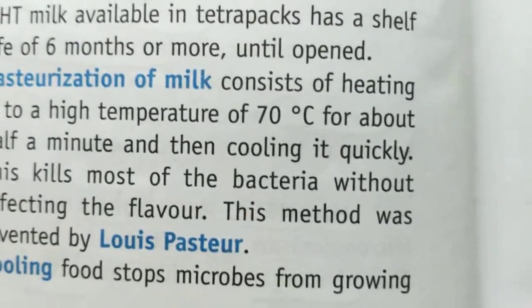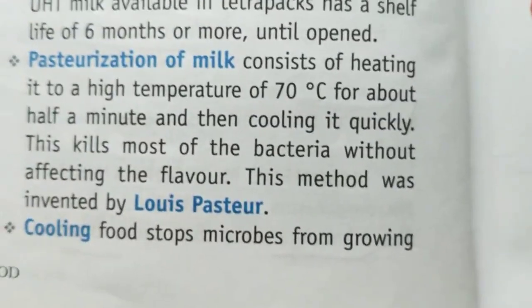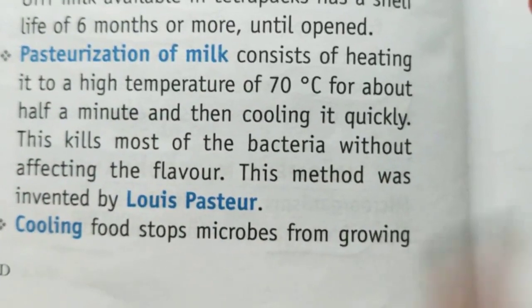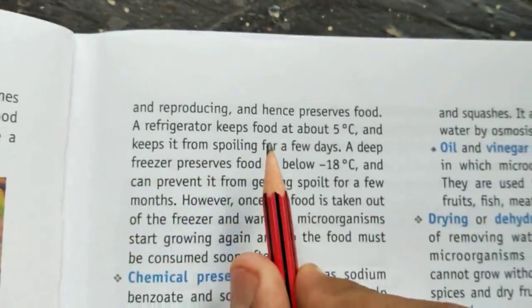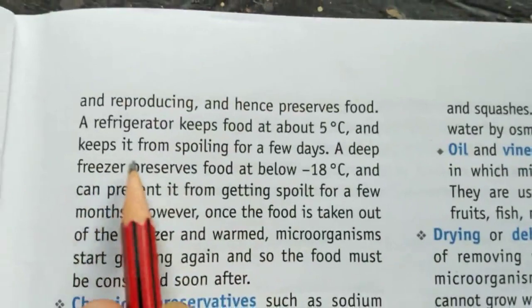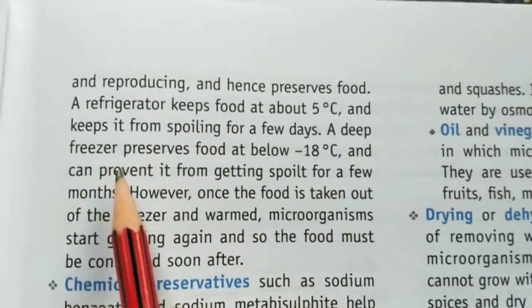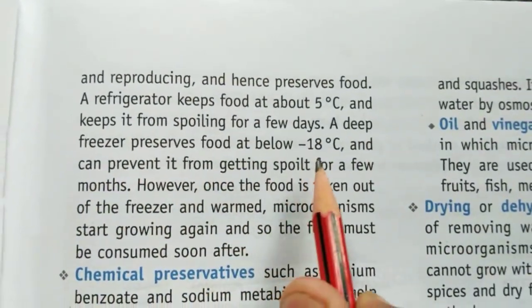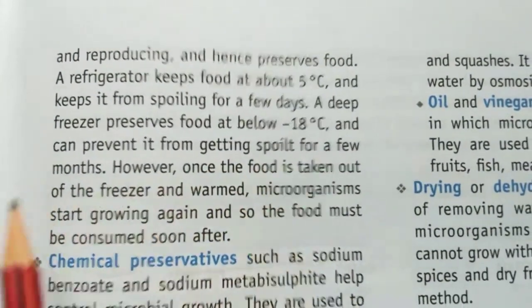Pasteurization of milk consists of heating it to a temperature of 70 degrees Celsius for about half a minute and then cooling it quickly. This kills most of the bacteria without affecting the flavor. This method was invented by Louis Pasteur. Cooling food stops microbes from growing and reproducing. A refrigerator keeps food at about 5 degrees Celsius and keeps it from spoiling for a few days. A deep freezer preserves food at below minus 18 degrees Celsius and can prevent it from getting spoiled for a few months.